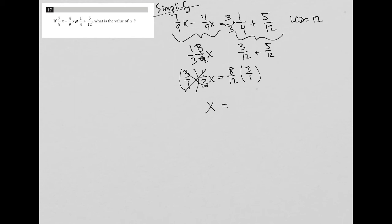And then here I could cross-cancel and say, 3 goes into 3 one time, 3 goes into 12 four times, therefore I'd have 8 times 1, which is just 8, 4 times 1, which is just 4, and 8 over 4 is just 2 over 1, or 2, and therefore my answer is 2.